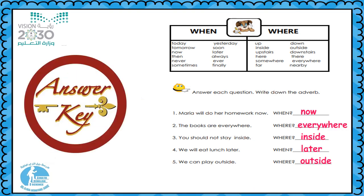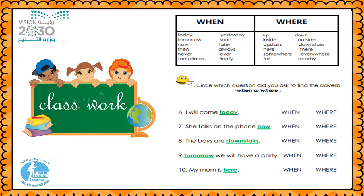Here's the answer key — check your answers please. Now we have to circle the question word — when or where — used to find the adverb. Number six: 'I will come today.' The adverb is 'today.' Which question does it answer — when or where? When. When will I come? Today. It shows the time — circle when.